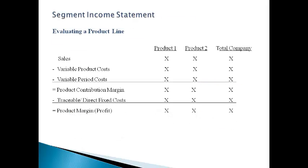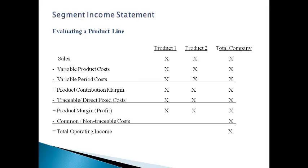Because of this, companies internally use a segment income statement. This statement assigns all variable costs that occur with sales, both product and period, and all direct fixed costs to each product line. The product margin line gives the profits for each product, considering all direct costs. The indirect costs are generally included in the common or non-traceable cost line, and they are assigned only to the total company. This is the closest product profitability that can be determined without allocating the common cost.